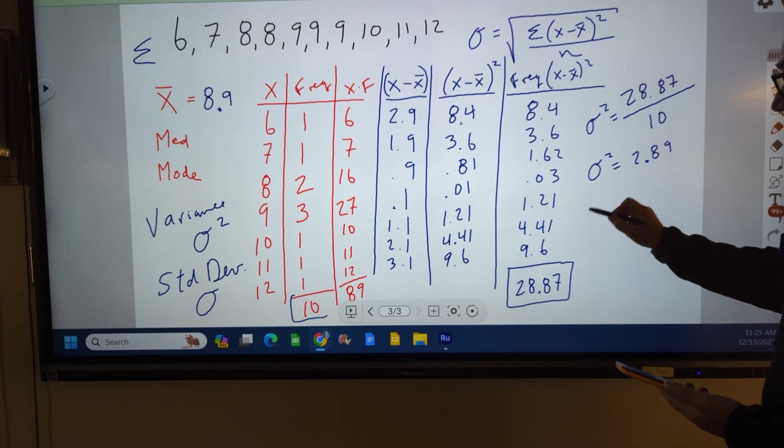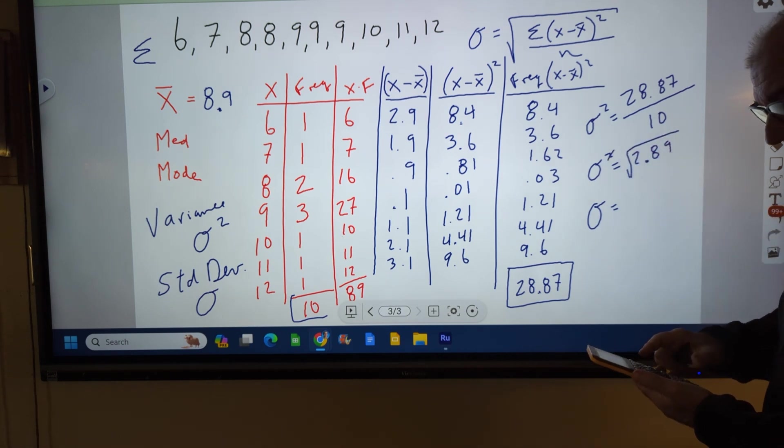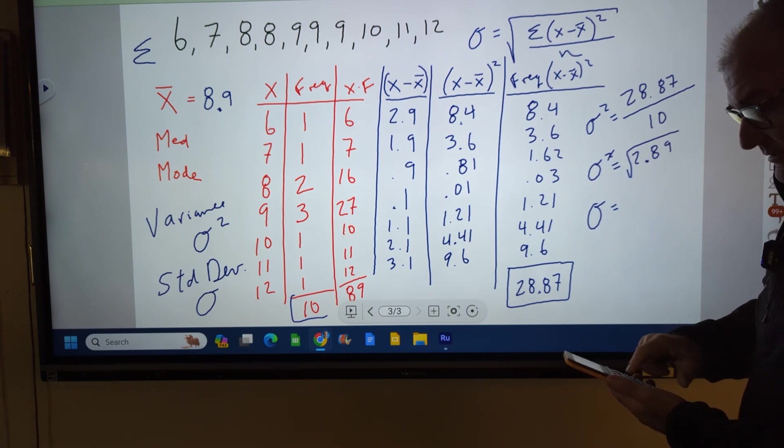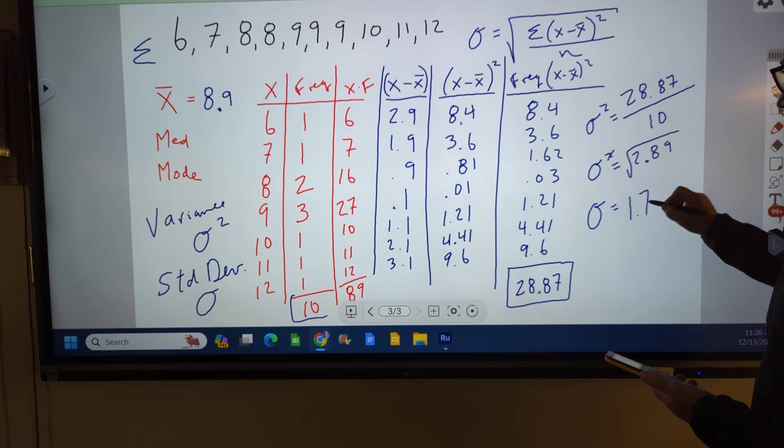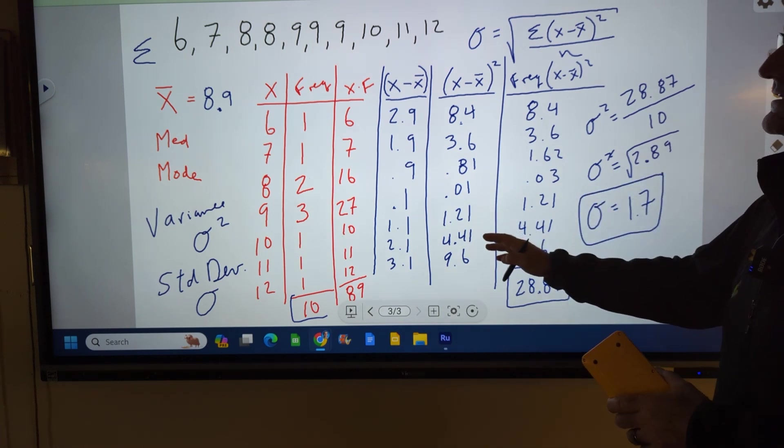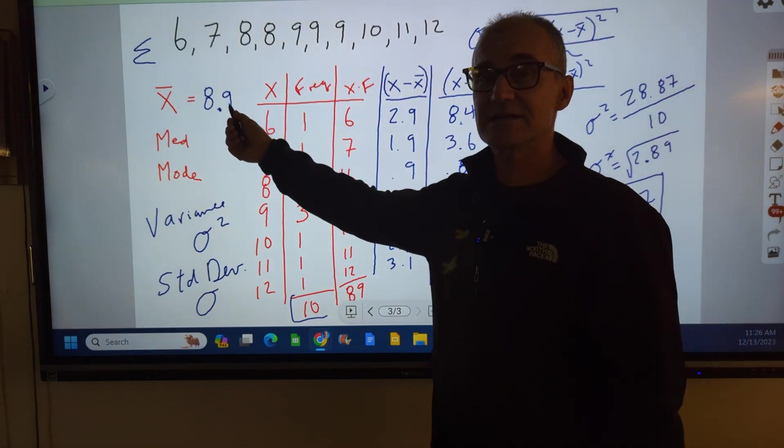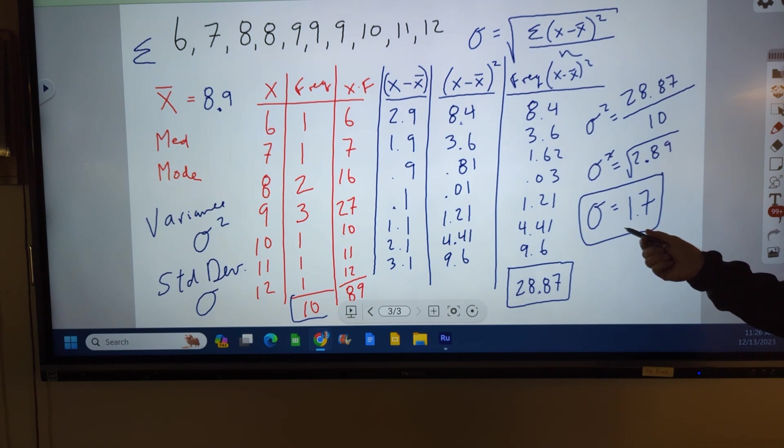And then now to find my standard deviation, I just take the square root of this. The square root of this is going to give me my standard deviation. So I take the square root of my variance and that gives me my standard deviation of 1.7. So given this set of data right here, my average shoe size is 8.9 with a standard deviation of 1.7.